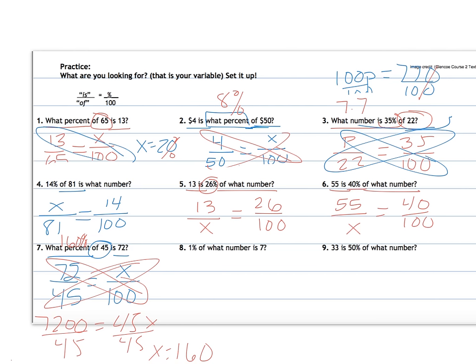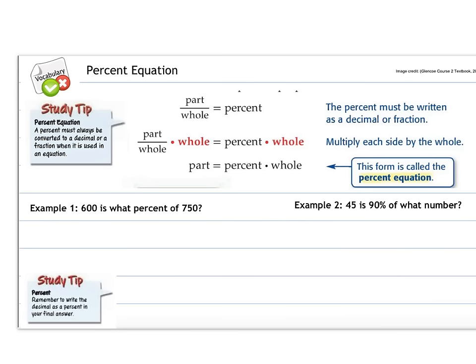1% of 100, of what number, is 7? So that's not going to be very much. 33 is, that's my part. My percent is 50, of what number is what I'm looking for. So setting it up is half the battle. Doing your cross products is old news, so make sure you're still working on that solving proportion step. Okay, last little bit here now.